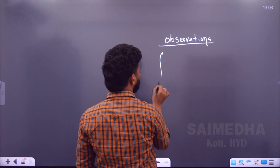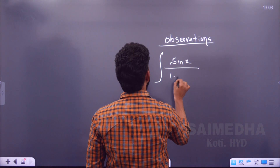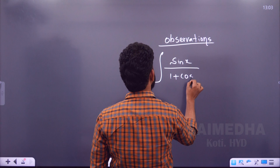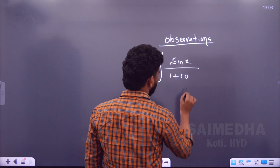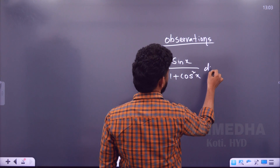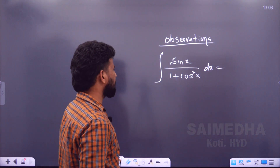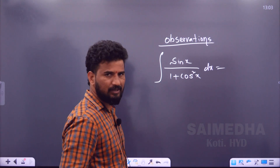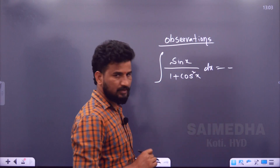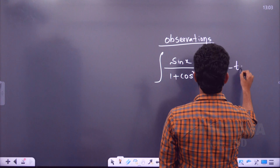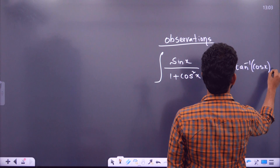Let me give you a simple example with observation. If I have sin x divided by 1 plus cos squared x dx, this is the question. If you observe this, the question can be rewritten and modified directly. The answer is minus tan inverse of cos x plus c.